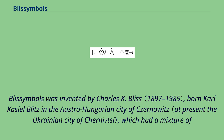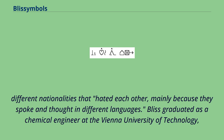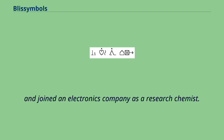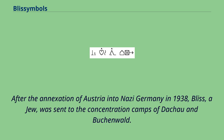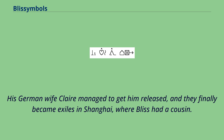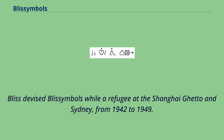Bliss symbols was invented by Charles K. Bliss, born Karl-Kaziel Blitz in the Austro-Hungarian city of Chernowitz, which had a mixture of different nationalities that hated each other, mainly because they spoke and thought in different languages. Bliss graduated as a chemical engineer at the Vienna University of Technology and joined an electronics company as a research chemist. After the annexation of Austria into Nazi Germany in 1938, Bliss, a Jew, was sent to the concentration camps of Dachau and Buchenwald. His German wife Claire managed to get him released, and they finally became exiles in Shanghai, where Bliss had a cousin. Bliss devised Bliss symbols while a refugee at the Shanghai ghetto, from 1942 to 1949.